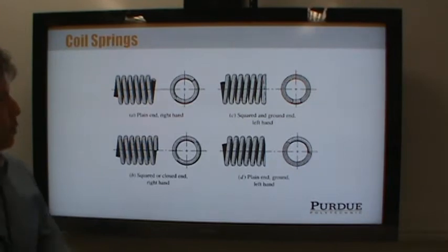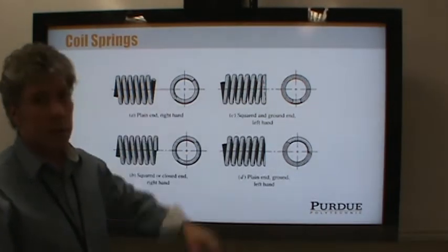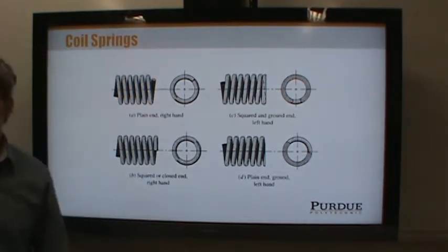There are also squared and ground ends where not only are the ends squared off, so they're touching, but they're also ground off. Now, if you've ever rebuilt an engine, you've probably seen these on the valve springs, right? The valve springs are always squared and ground because you want the ends to be flat and not to turn.